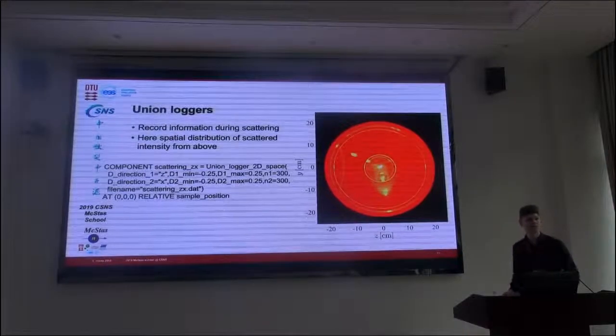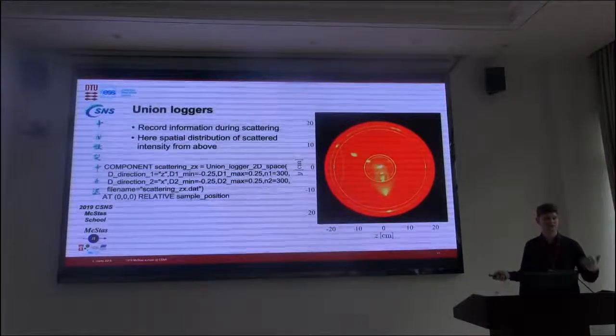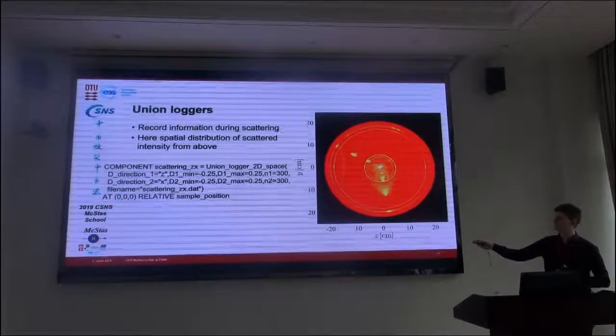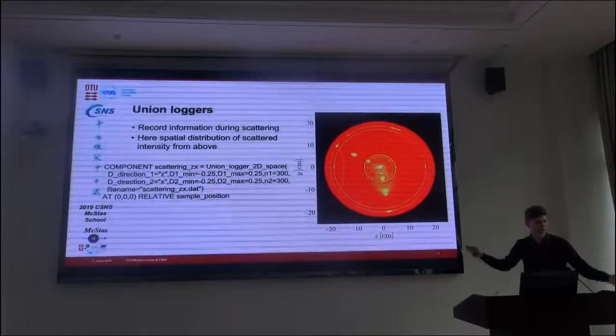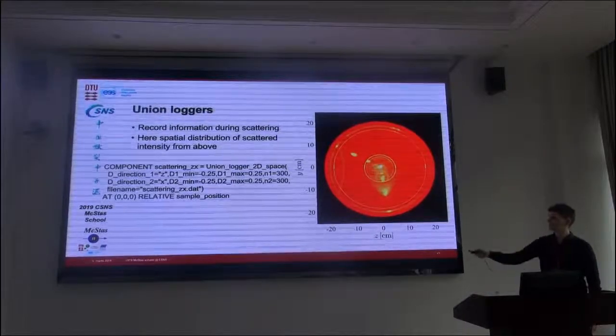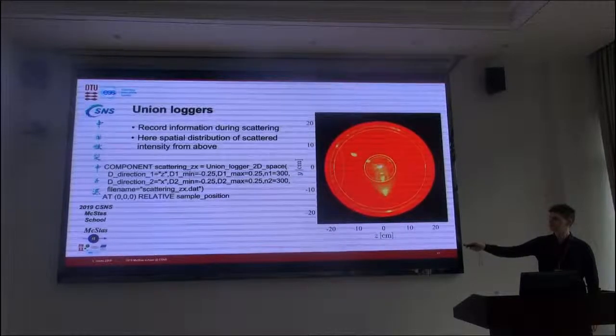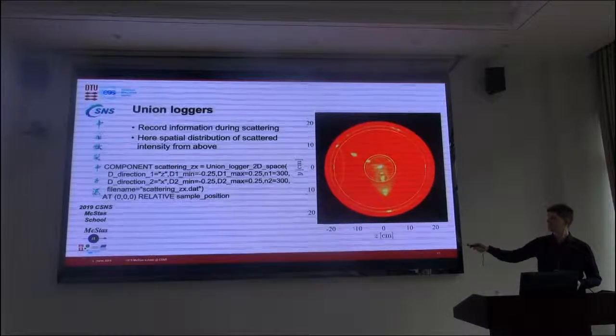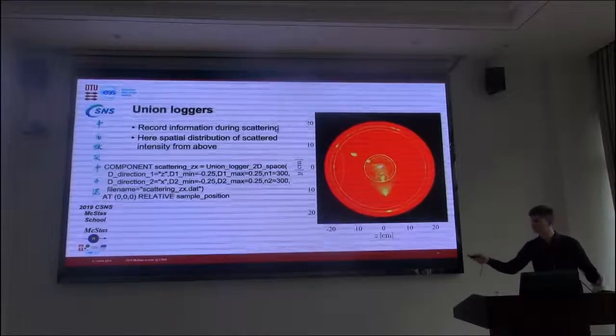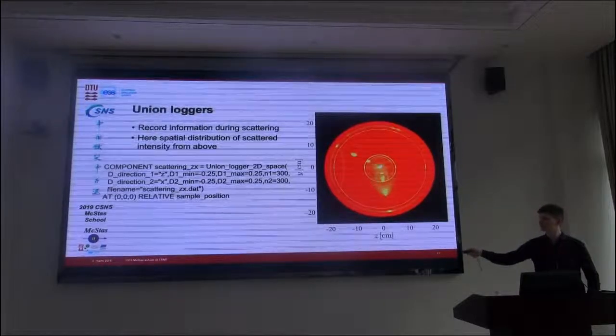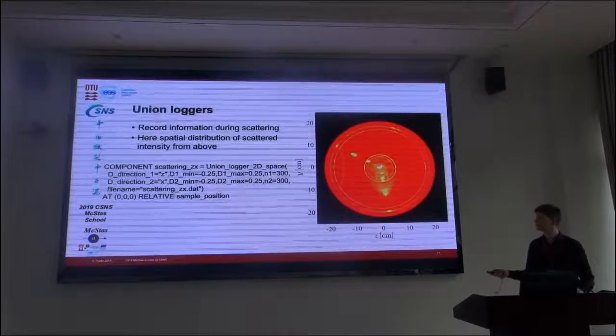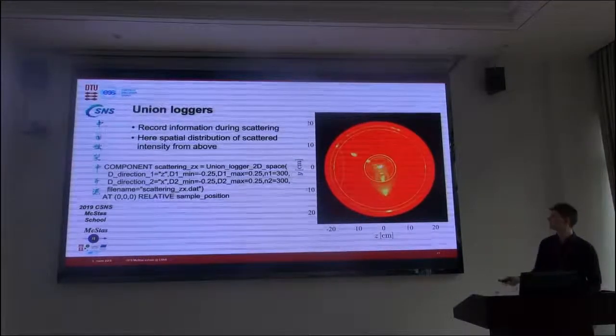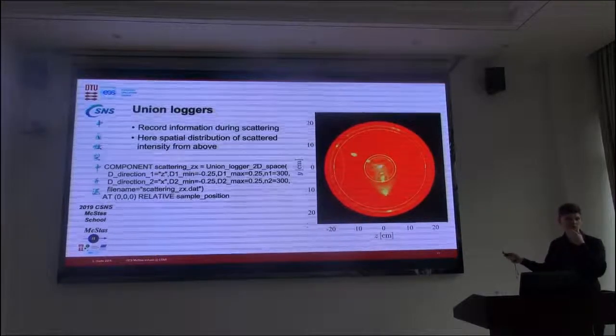Let's look at how you add such a component to your exercise. Well, you need to use the union logger. And now I want to see a two-dimensional image of space, so I use 2D space. Then it's a little different. You need to define your directions. I want the Z and the X direction. And then I put a minimum and a maximum. And this is, of course, centered around the position I select with the component. And then we just have the resolution of the detector and a filename.